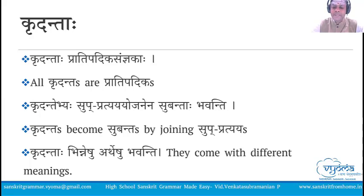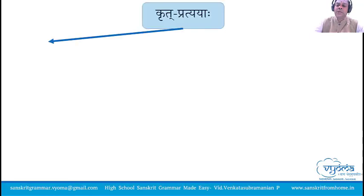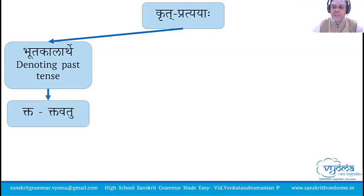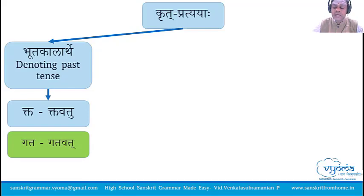There are different applications of these kritaantas. In this course, we will be touching on the following krita pratyayas. First, bhuta kalartha krita pratyayas — they are kta and tavatu, two pratyayas which denote past tense. For example, with gam dhatuhu, adding kta pratyaya, it becomes gataha in Pullinga. If you add tavatu pratyaya, in Pullinga it will become gatavan. Gatavan means went; gataha also means went but has a different connotation.